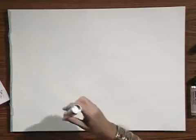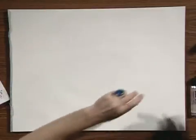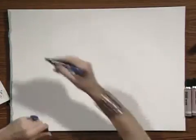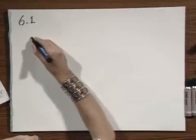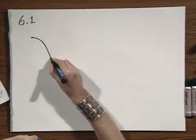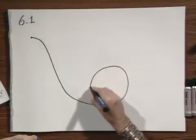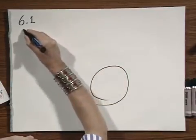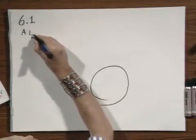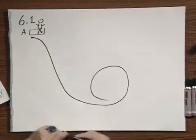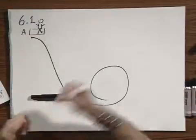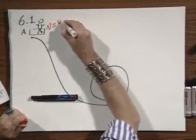Problem number one, problem six one: a roller coaster. You are on a roller coaster at location A — you're a daredevil — and you go down from point A. Here you are in your roller coaster. You're sitting there innocently, at least at this moment in time, not being aware of the terrible things that are going to happen to you.